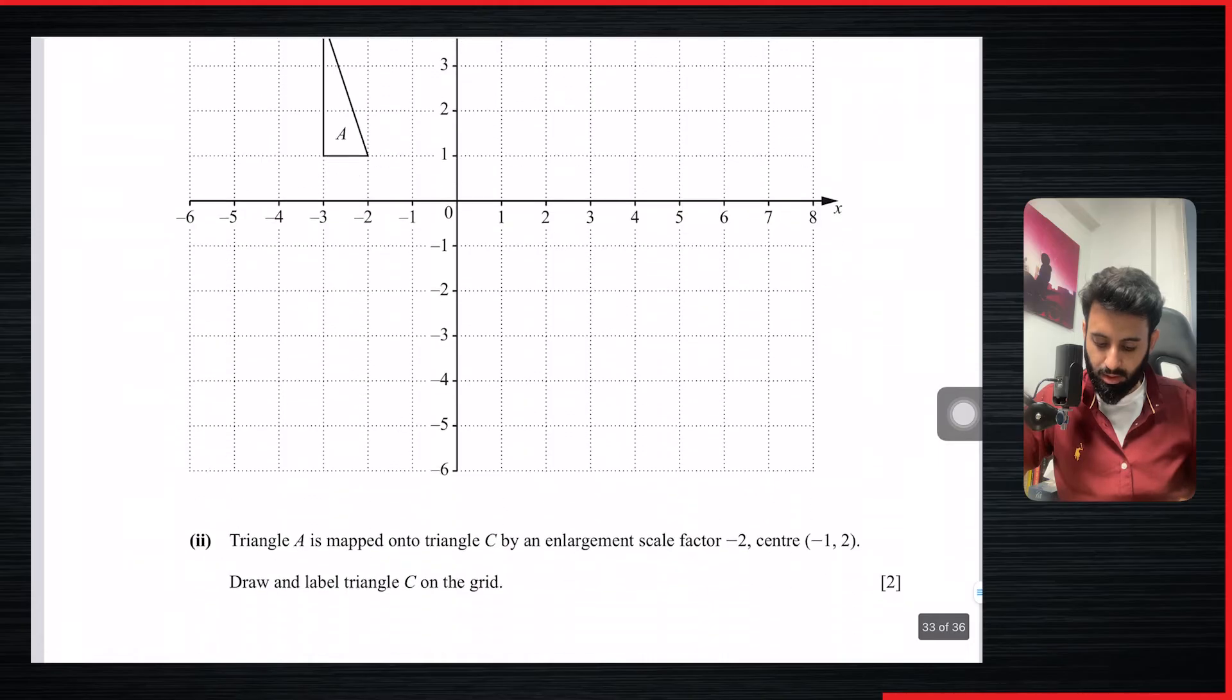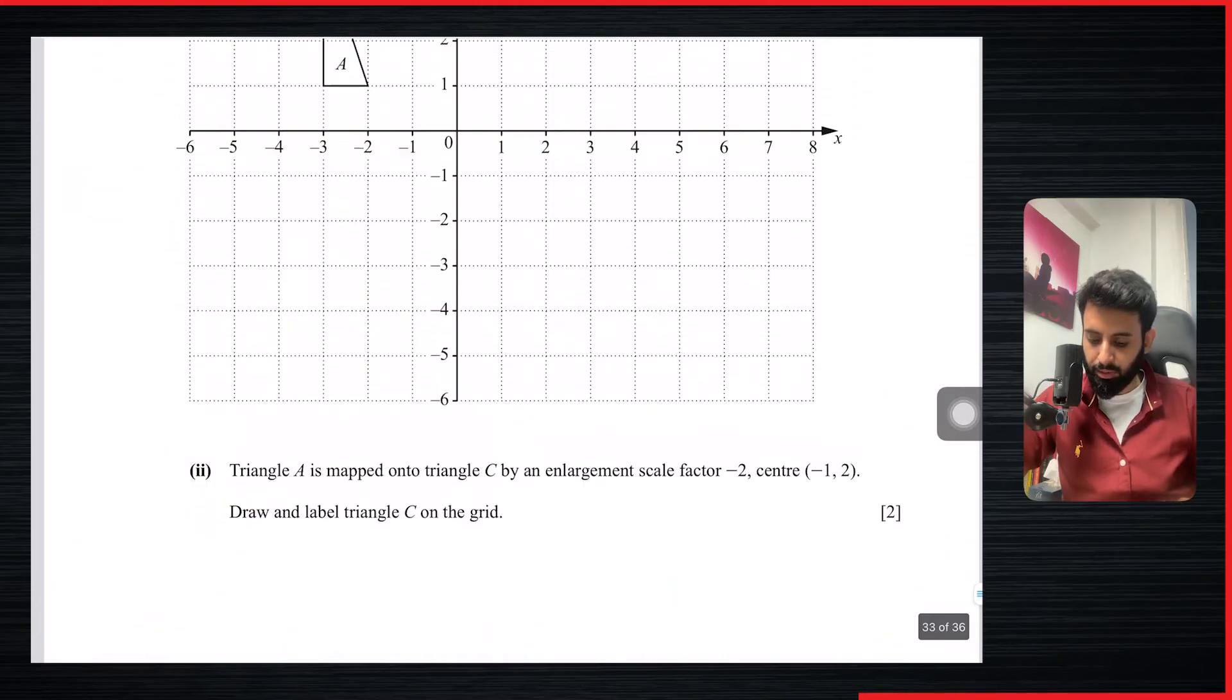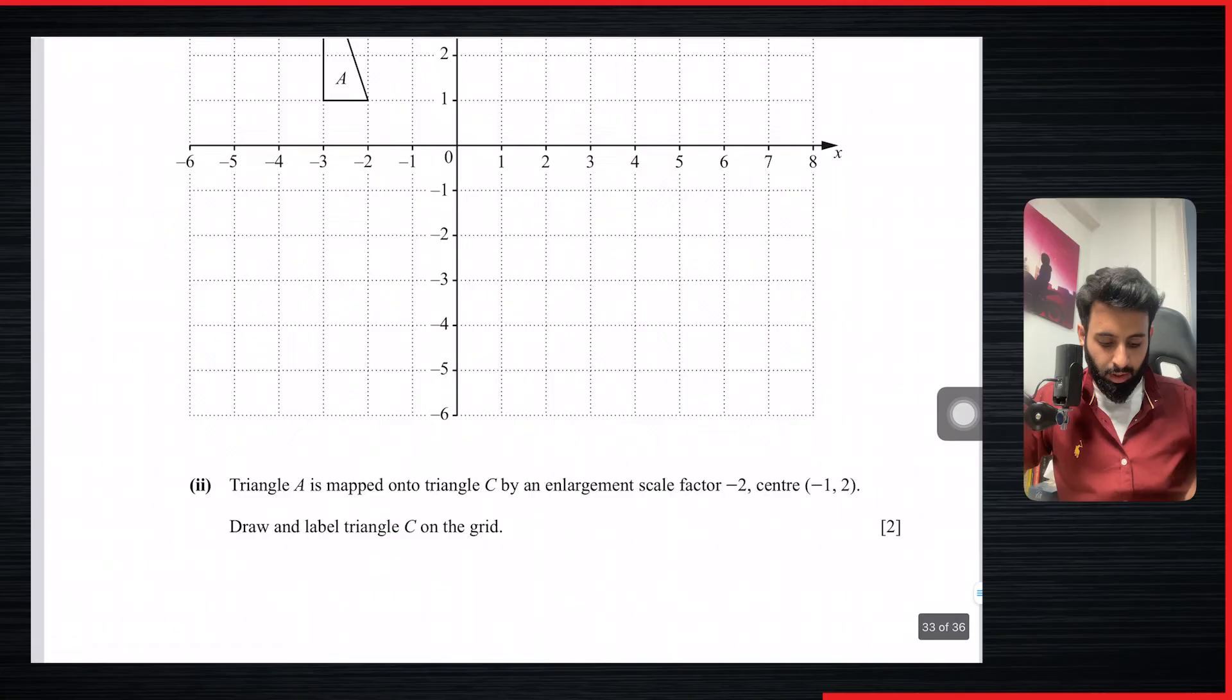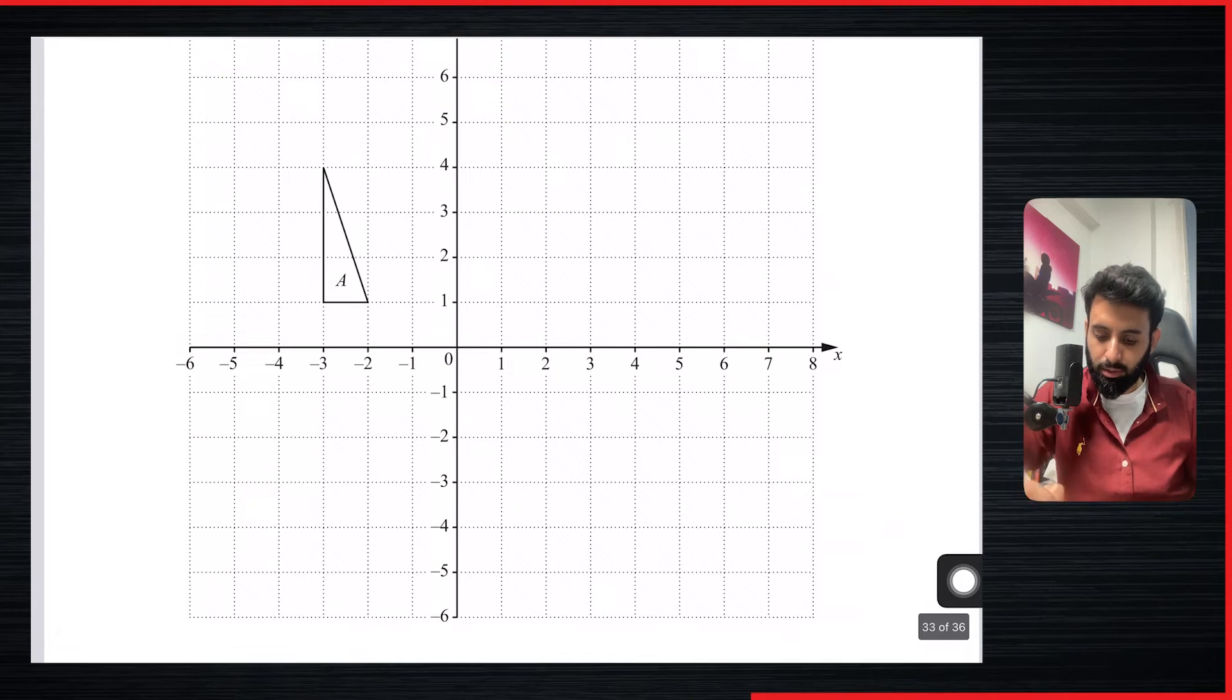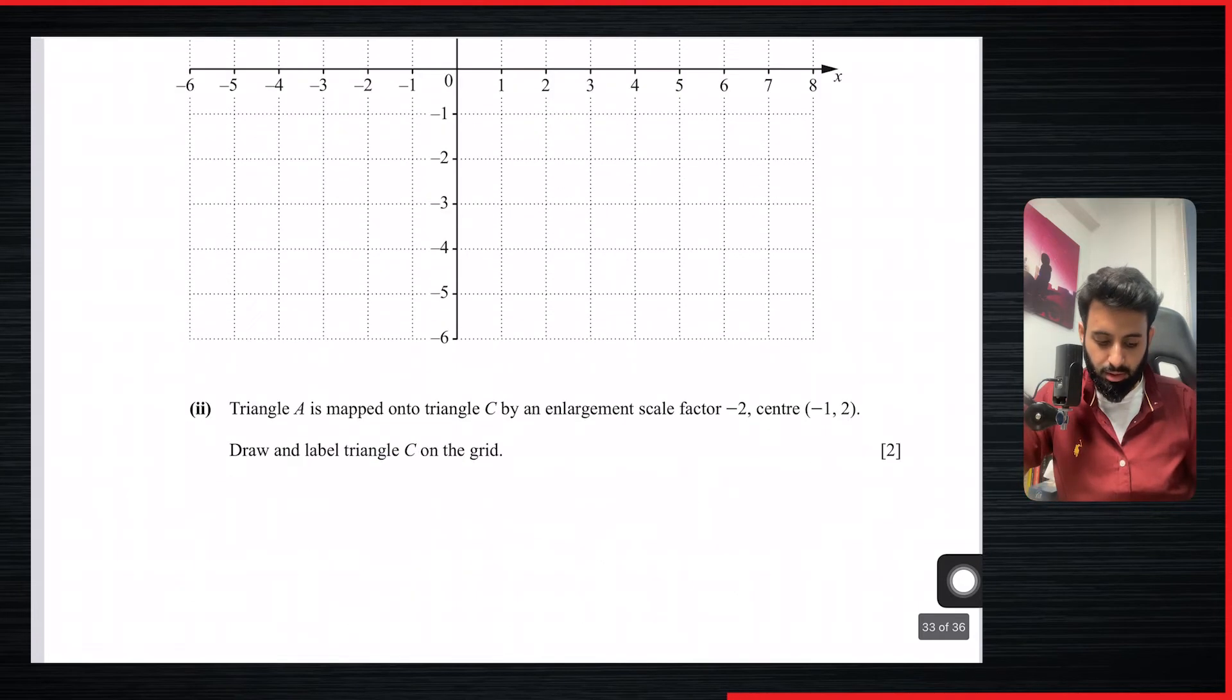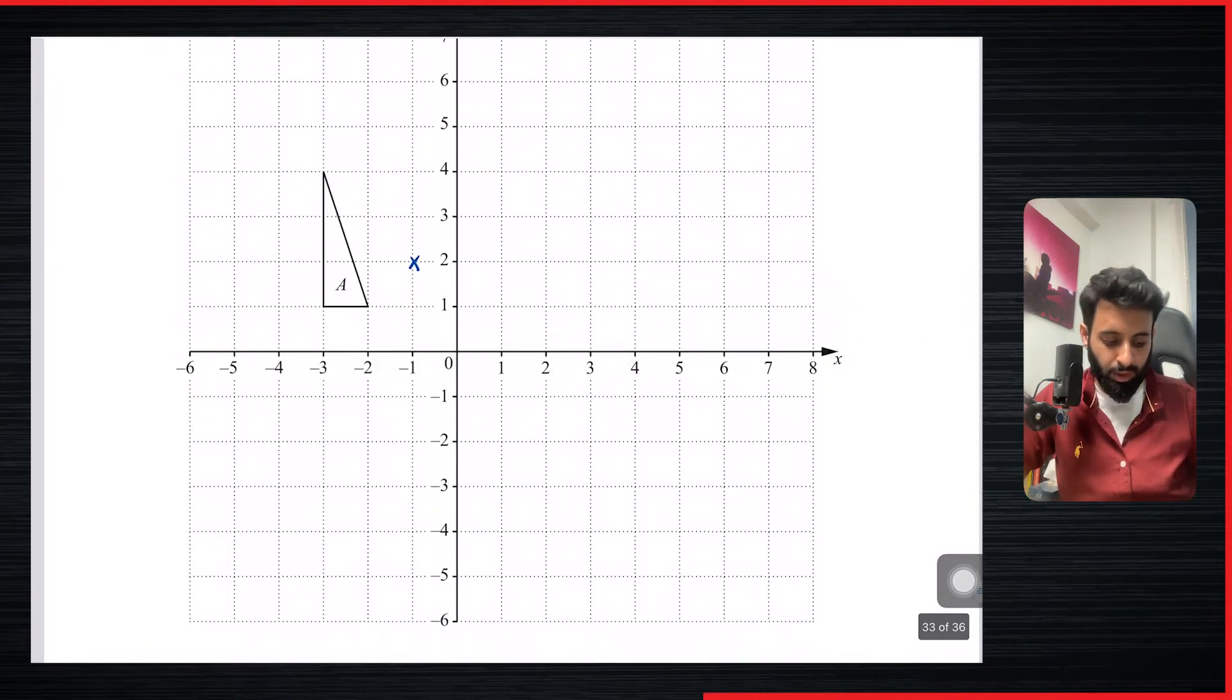Here's another example. This is from October November 2017, paper 2, variant 2. So here also, the scale factor is minus 2. The center, however, is (-1, 2). So again, the first thing you want to do is you want to put a big cross on the center. So minus 1 comma 2. Yep, there you go.